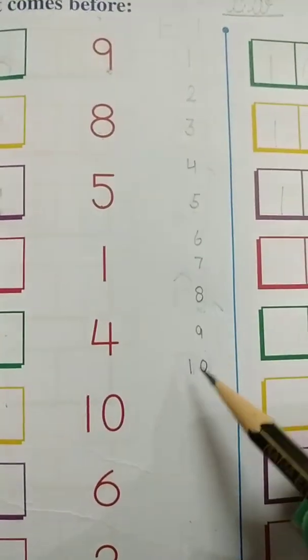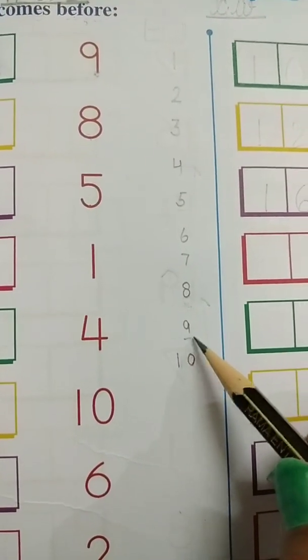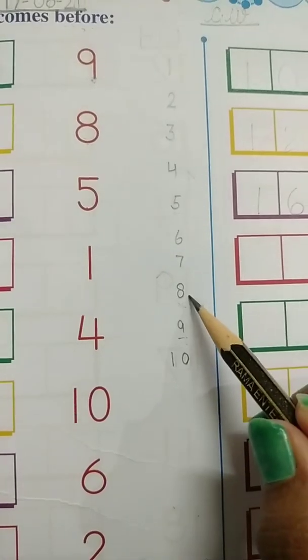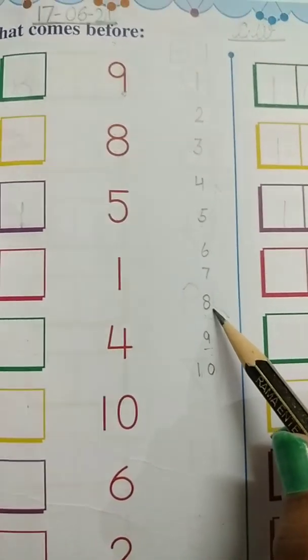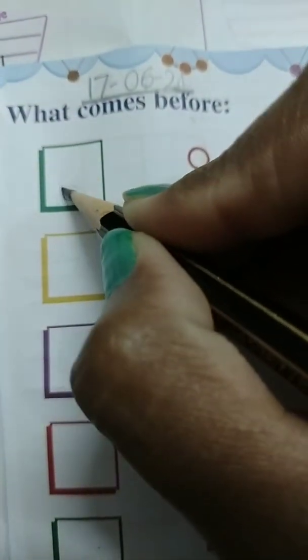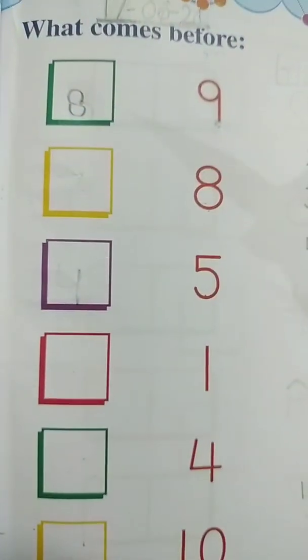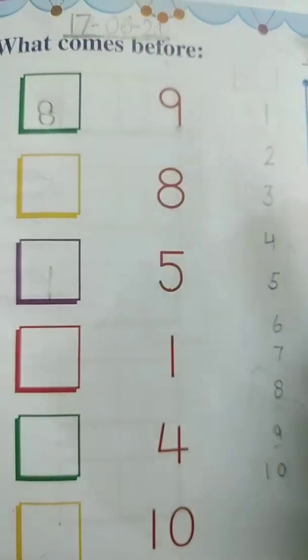So where is 9? Here is 9, and if I move one step backward what I get? I get 8. It means 8 comes before 9. So here I have written 8.